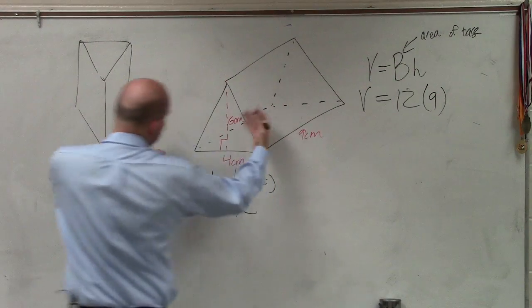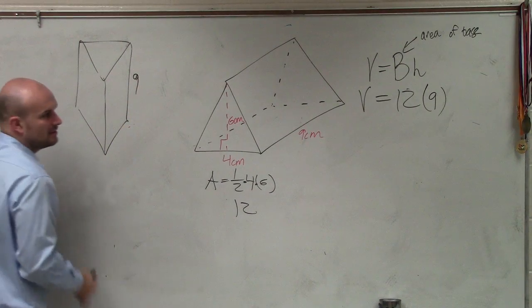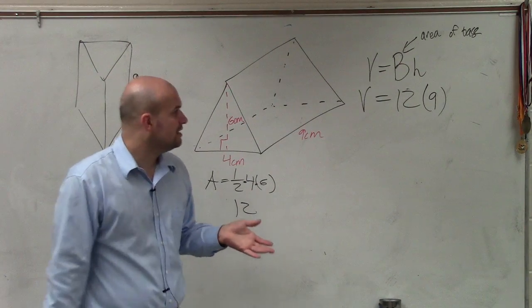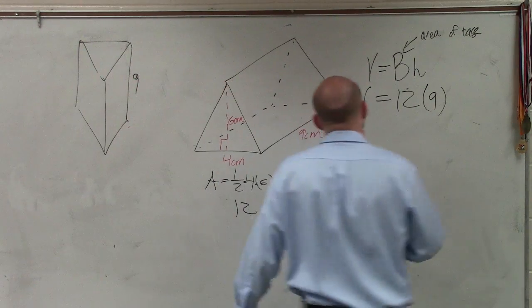Because if I were to turn this figure with this being its base, that would be the height, which would be 9. So 12 times 9 would be 108.